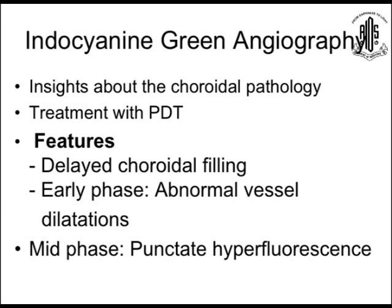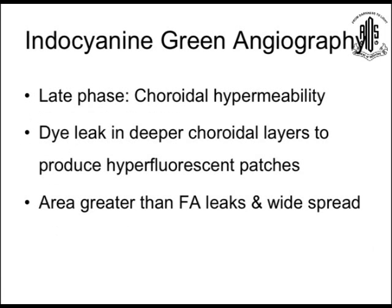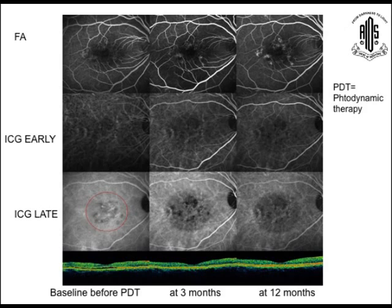Now we come to indocyanine green angiography. This gives insights about the choroidal pathology. Previously this condition was called central serous retinopathy, but now we call it choroidal retinopathy, and ICG angiography plays an important role. It is also important for treatment planning with photodynamic therapy. Features include: delayed choroidal filling initially; early phase shows abnormal vessel dilatations; mid-phase shows punctate hyperfluorescence; late phase shows choroidal hyperfluorescence due to dye leak in deeper choroidal layers. The area of involvement is greater than fluorescein angiography leaks, more widespread, and sometimes extends to the fellow eye.